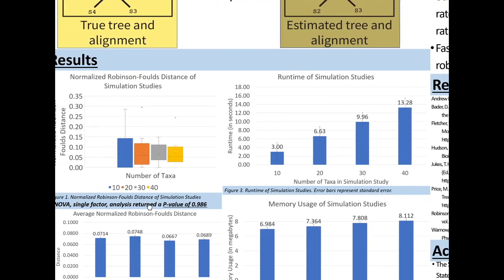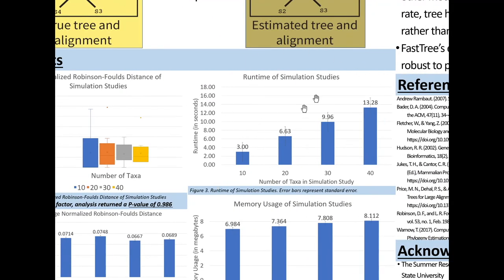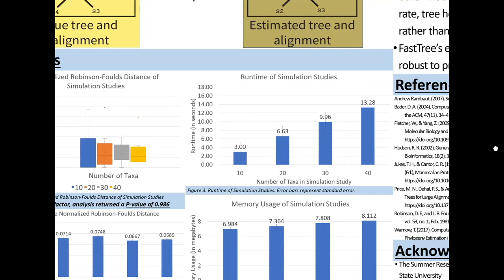Then I also collected the computational data in this top graph. You can compare the number of taxa in the simulation study and the run time. You can see that there's a positive correlation between the number of taxa and the amount of time it took. You can also see in this figure below the amount of memory usage between each of the studies, and again there is a positive correlation between the amount of memory used and the number of taxa, proving that this is a difficult computational problem.